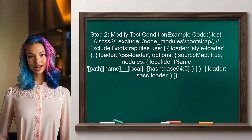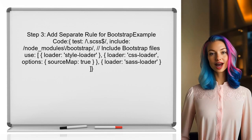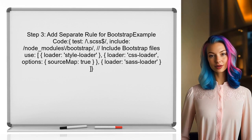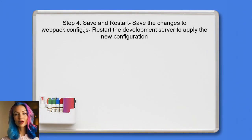This can be achieved by using a regular expression in the test property. Next, add a separate rule for the Bootstrap files. This rule will ensure that Bootstrap styles are loaded without CSS module scoping. Finally, save the changes to the Webpack configuration and restart the development server. This will apply the new settings and ensure Bootstrap styles are not scoped.